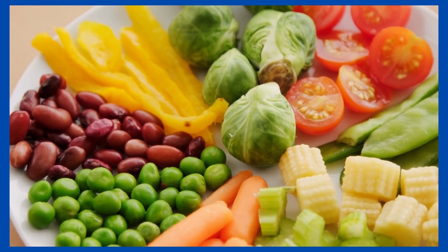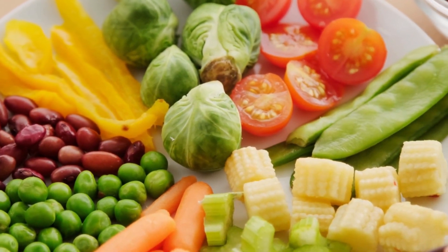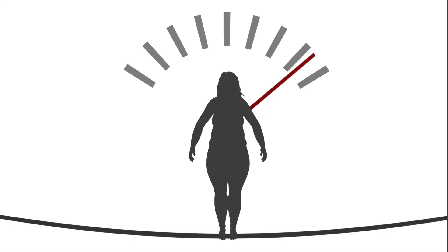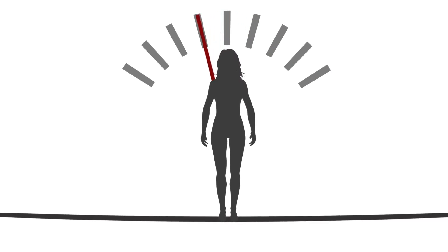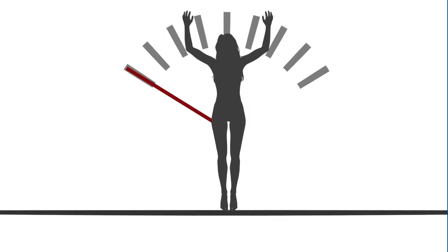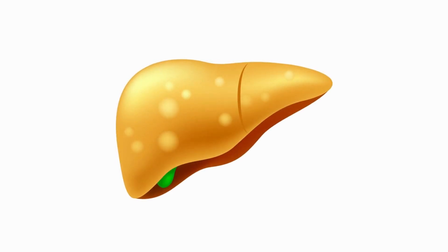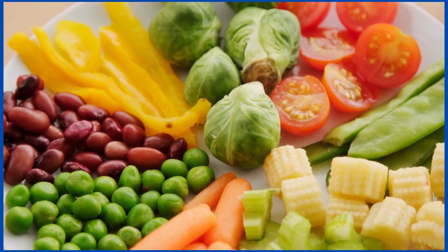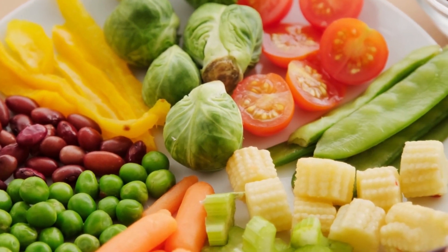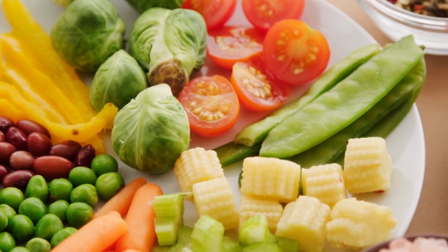Adopting a healthy lifestyle is the main way of managing NAFLD. Losing weight can help — you should aim for a BMI of 18.5 to 24.9. Losing more than 10% of your weight can remove some fat from the liver. A healthy diet helps too. Try to have a balanced diet high in fruits, vegetables, protein, and carbohydrates.